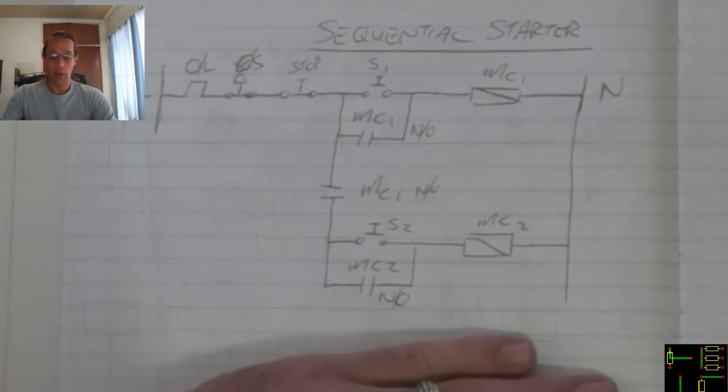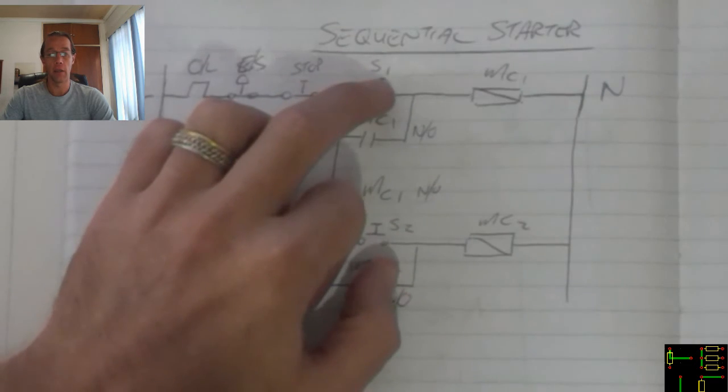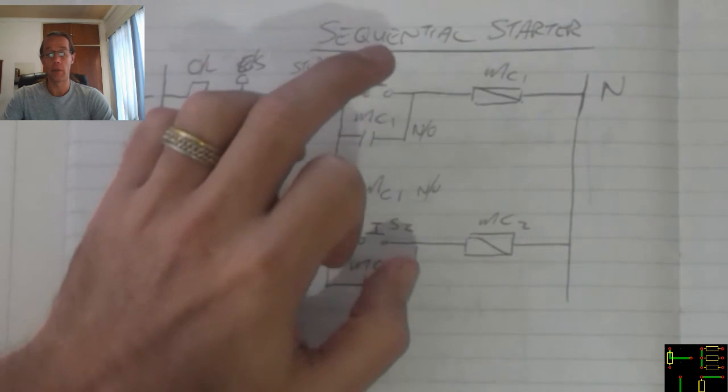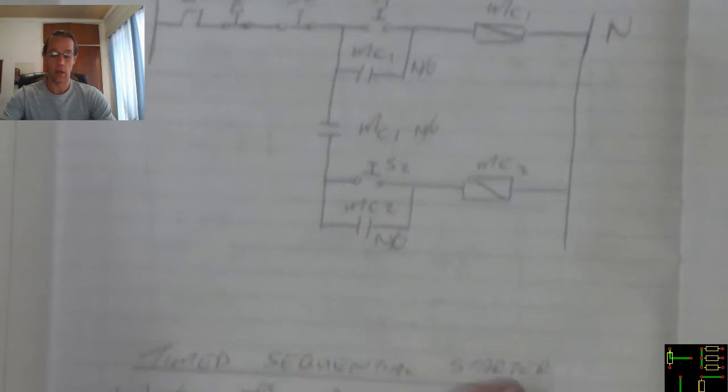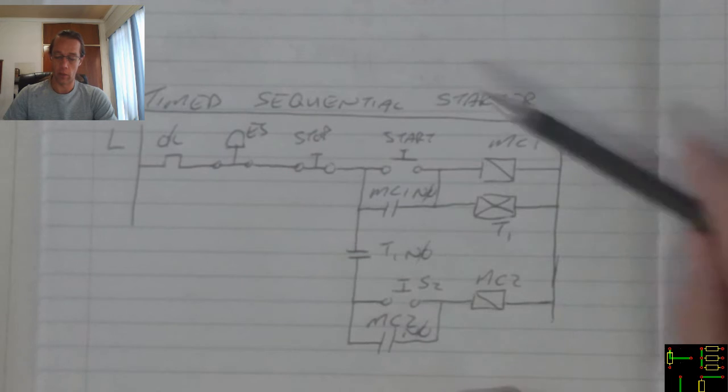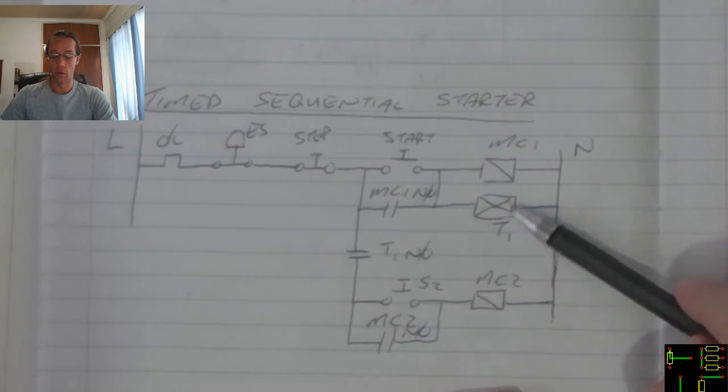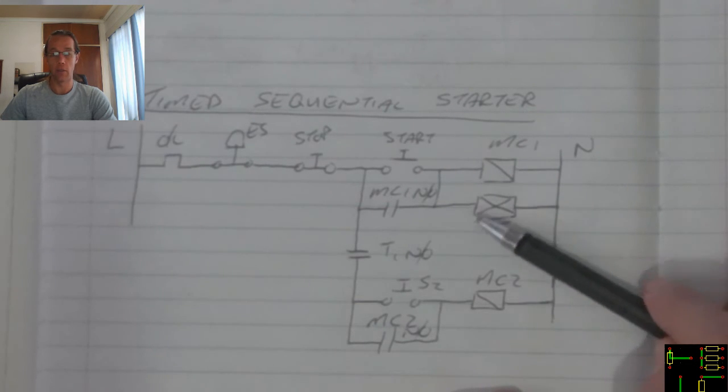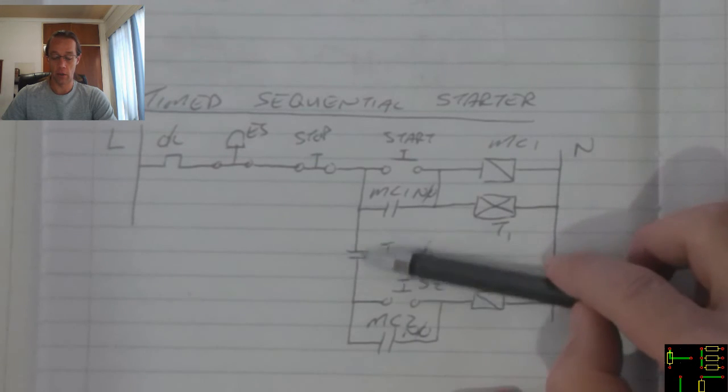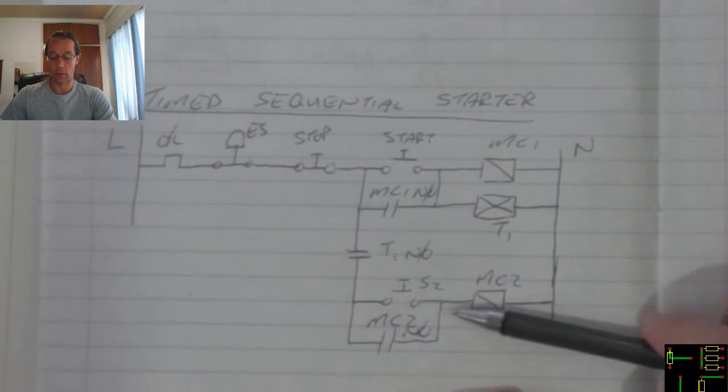Now sometimes we can replace this process instead of having it being manually activated, or if we want a delay between the two activations, then we can introduce this type of configuration where we introduce a timer into the circuit. This timer once it receives power will start running, once it reaches its predetermined time it will then close that contact and that in turn will allow us to start running our second output.